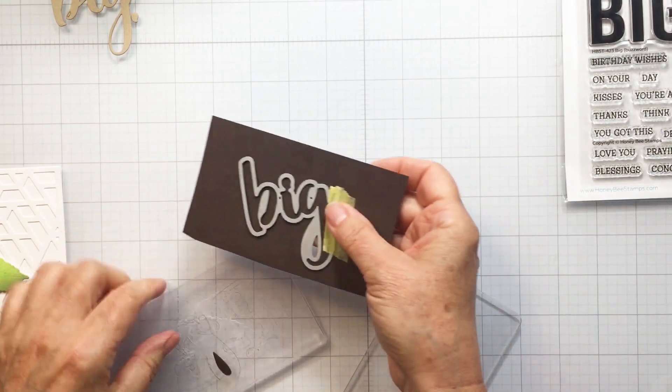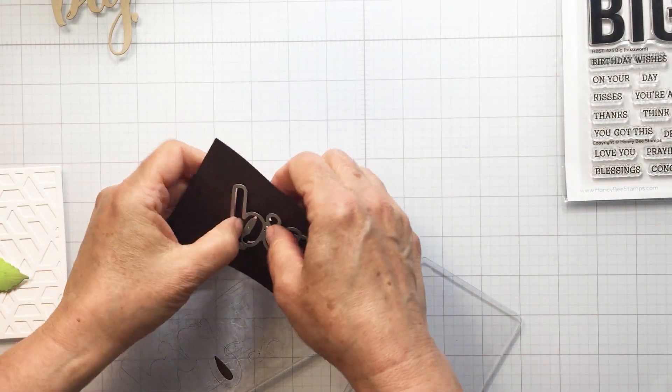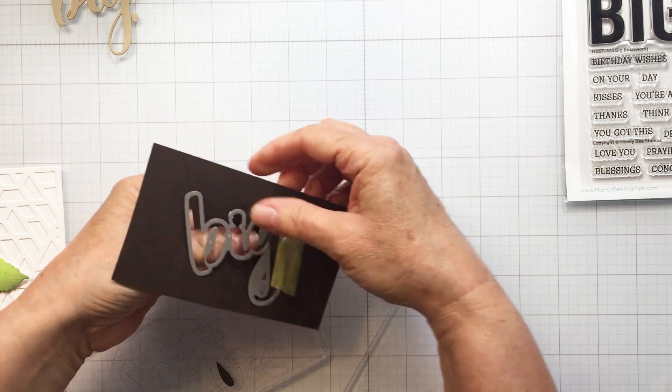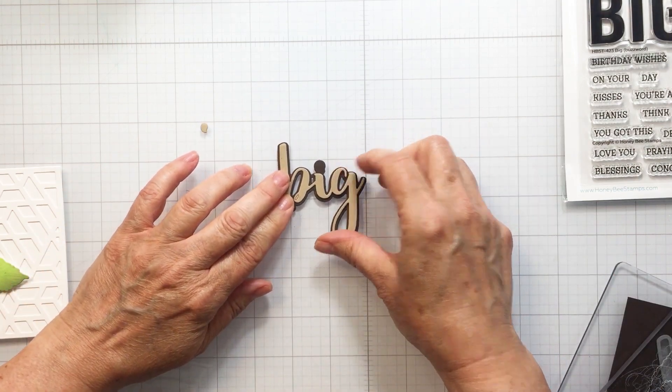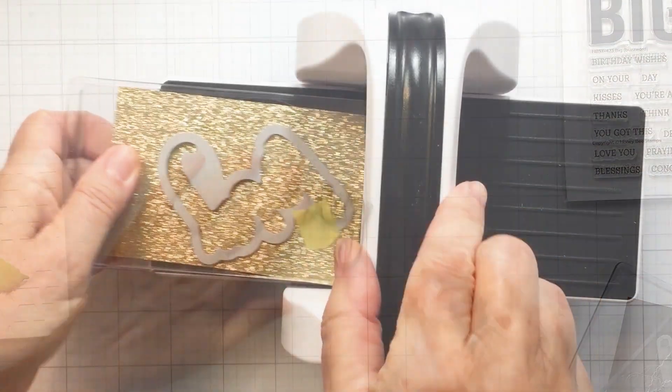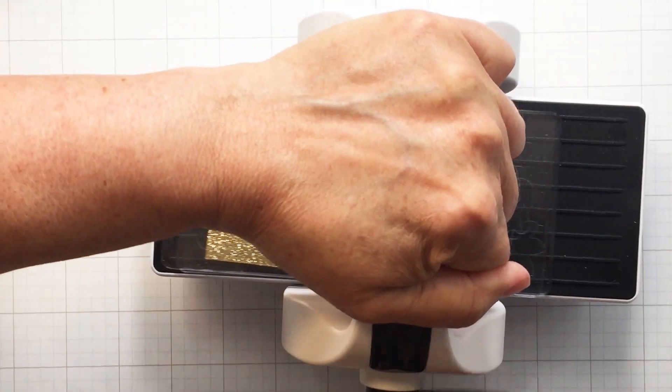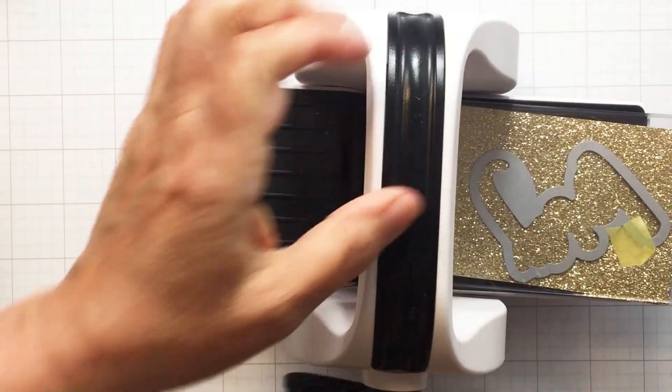But I started off with craft for the first layer. The second layer I did in brown cardstock and then the third layer I use some gold glitter cardstock. When I went to put these layers together I didn't like how the craft looked—I just thought it was a little bit too dark for my project.